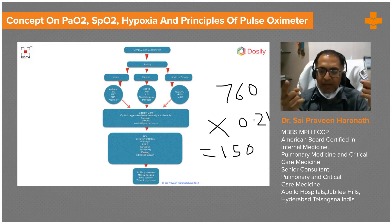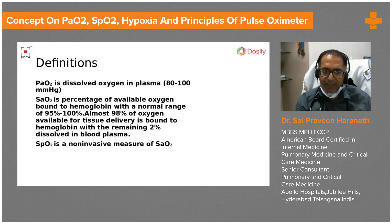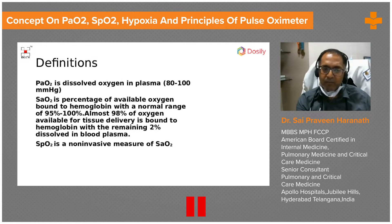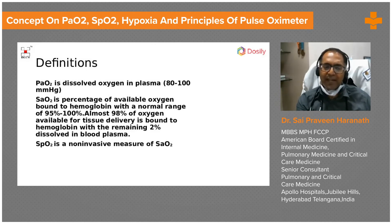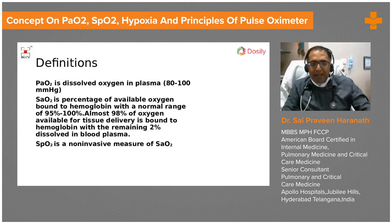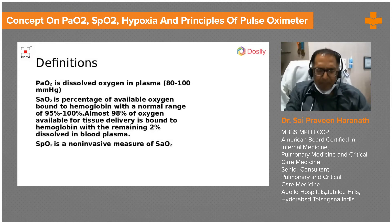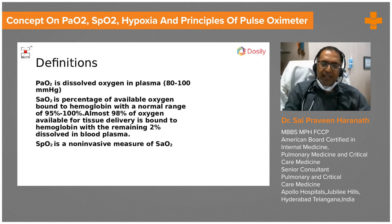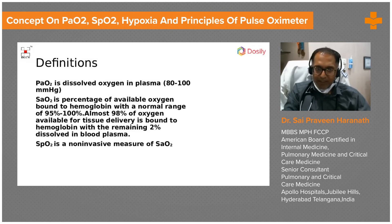To summarize definitions: PaO2 is the dissolved oxygen in plasma, normally 80–100 mmHg — note that ventilator pressures use centimeters of water rather than mmHg. SaO2 is the percentage of available oxygen bound to hemoglobin, with a normal range of 95–100%. Almost 98% of oxygen available for tissue delivery is bound to hemoglobin, with only a small remaining percentage dissolved in blood plasma.